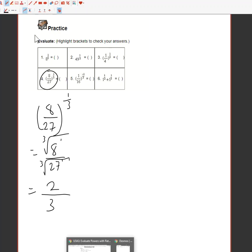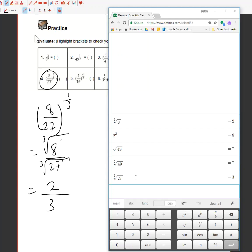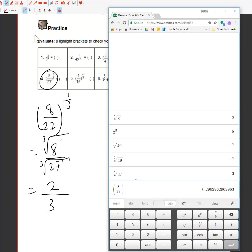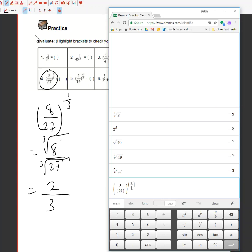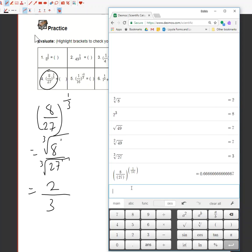Now Desmos is pretty cool because it can even go ahead and do the whole question at once if I wanted to. I could have used some brackets and said, bracket 8 over 27, close the bracket and then I can do that to the power of bracket 1 divided by 3, close the bracket. I get this horrible looking decimal, 0.666666667.